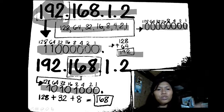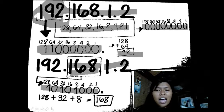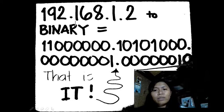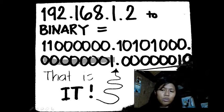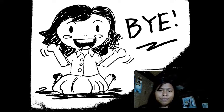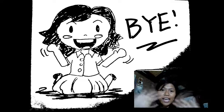I won't show the conversion of 1 and 2 because it's the same process. After you convert all numbers, the full result is: 192.168.1.2 in binary equals 11000000.10101000.00000001.00000010. That's how to convert an IP address to binary. That's all for this video — thank you for watching, bye!